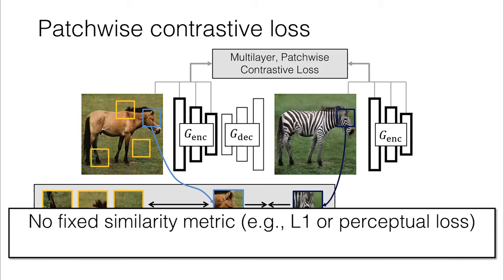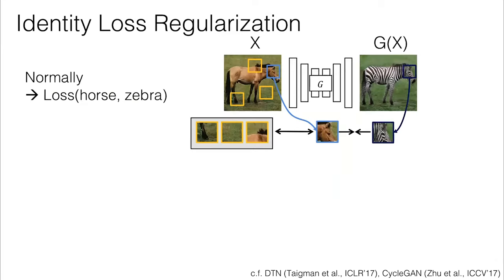One interesting property is that our method does not rely on any fixed similarity metric, such as L1 or a perceptual loss. This loss ends up being learned, so we're getting cross-domain visual similarity in an emergent manner. Another good property is that this enables one-sided translation. We're not taking the zebra and going back to the horse. We're saving that whole path back, which gives us a lighter memory footprint and faster runtime so we can train much faster.